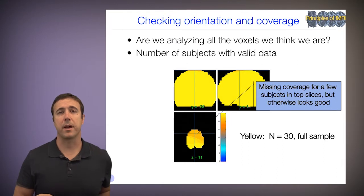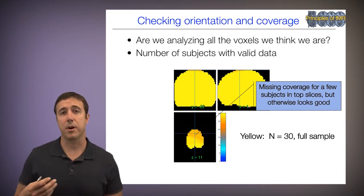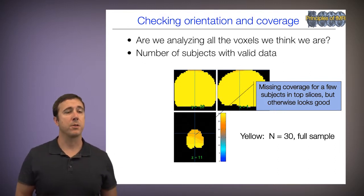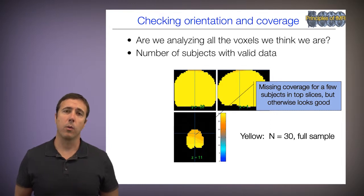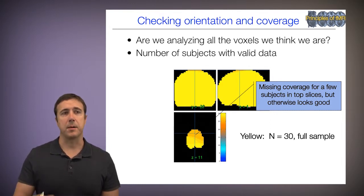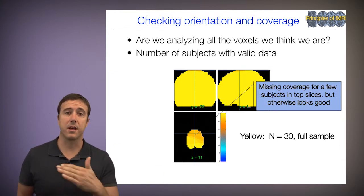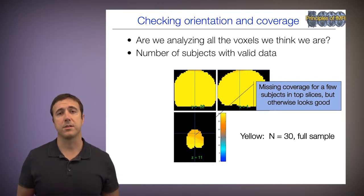Another basic check: are you analyzing all the voxels you think you're analyzing? Many times people do a group analysis, don't get results, and if you look at the mask of which voxels were actually analyzed, a lot of the cortex is missing. This happens because of how certain software packages exclude voxels with partial data or low image intensity values. We expect to see coverage everywhere we have valid data for the full sample. Here it looks pretty good — missing some coverage in the top slices for a few subjects, but otherwise fine.